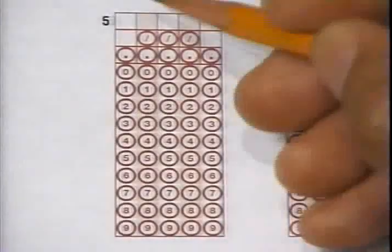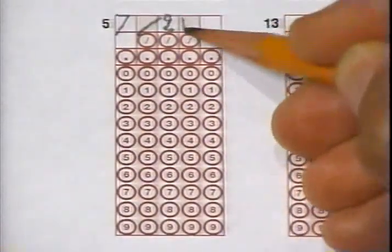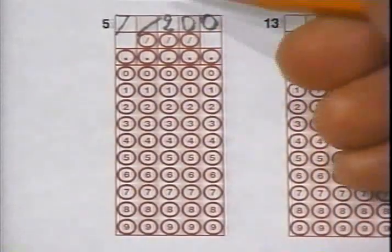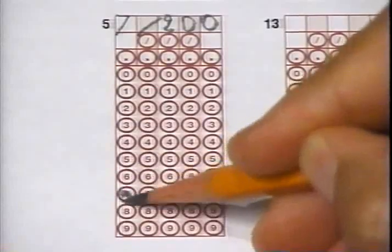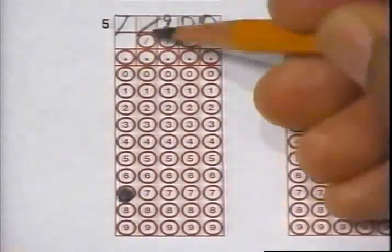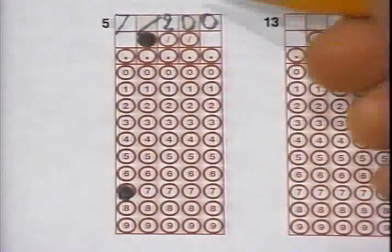Using one numeral or symbol per box, we write the answer across the top of the standard grid. Then we begin filling the circles with the matching numerals and symbols. First, we fill in the 7 circle directly under our written numeral 7. Then the fraction line symbol under the fraction line we drew to separate the fraction's numerator from its denominator.